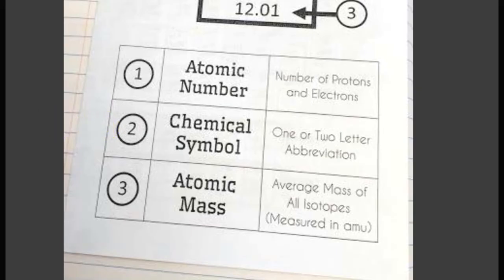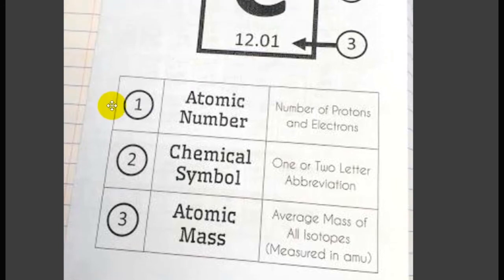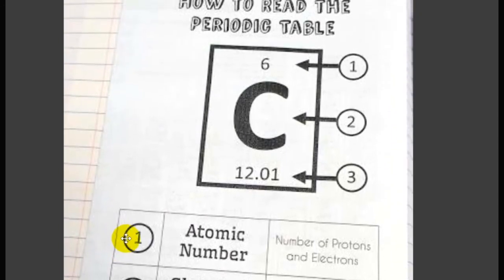Next, an element must have a symbol. In this case, we have the letter C, which is the symbol for carbon.